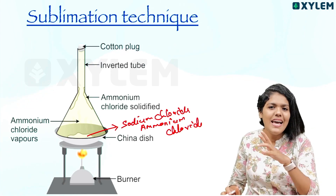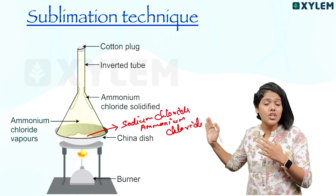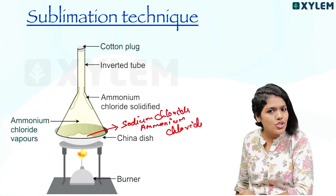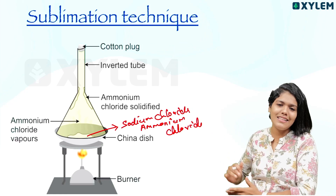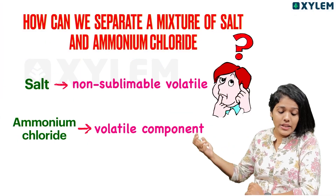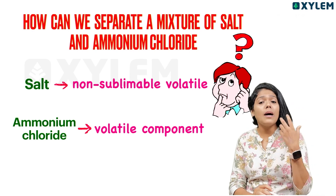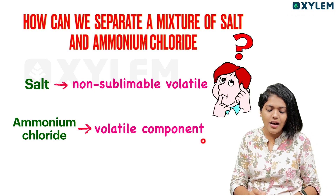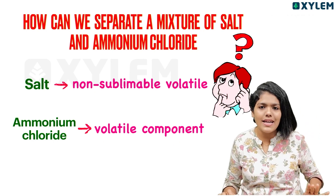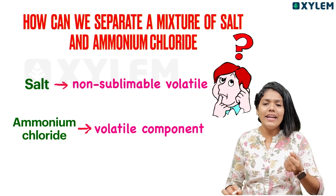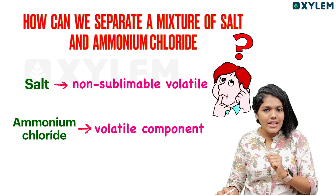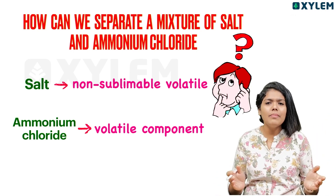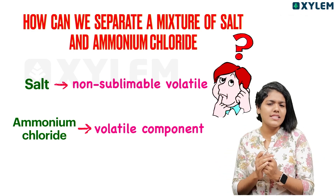Sodium chloride is non-volatile and does not sublime, so it remains in the dish. Ammonium chloride, which shows sublimation, converts to gas and is collected separately. This is how the sublimation technique works — the volatile sublimable component is separated, while the non-volatile salt remains behind.